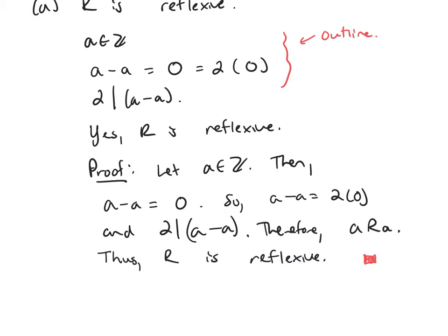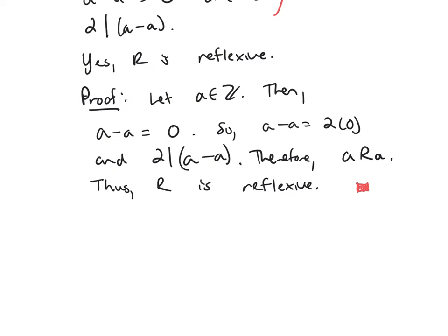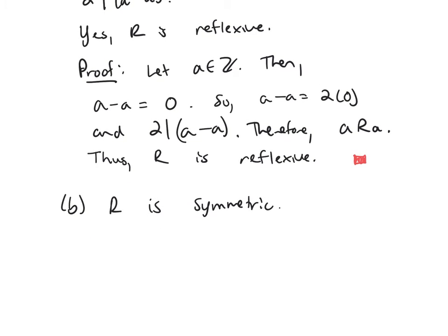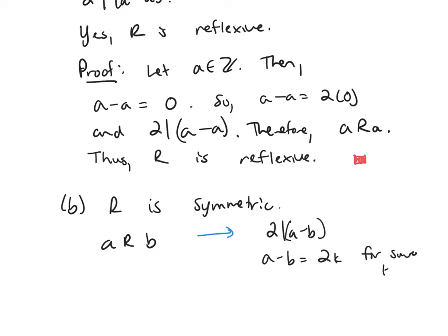We proved that this relation is reflexive. Part B: is R symmetric? Suppose A is related to B. That means two divides A minus B, so A minus B equals two times K for some K in Z.